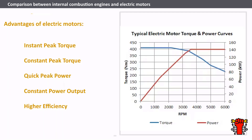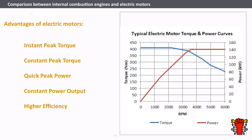Contrastingly, electric motors showcase significant advantages. Instant peak torque: electric motors start with peak torque, enhancing acceleration from the moment they engage. Constant peak torque: they maintain peak torque over a range of speeds, contributing to consistent and efficient acceleration. Quick peak power: electric motors can swiftly reach peak power even at lower RPMs, improving overall performance. Constant power output: modern traction motors exhibit a wide constant power speed region, allowing for stable and efficient operation.